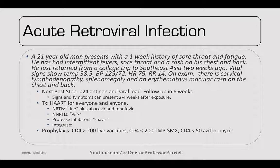You would want to treat everyone with HAART therapy. Drug classes include NRTIs, which all end in '-ine' (plus abacavir and tenofovir); NNRTIs, which have '-vir' in the middle; protease inhibitors, which end in '-navir'; and integrase inhibitors. For AIDS prophylaxis: anyone with CD4 greater than 200 can get live vaccines. Anyone with CD4 less than 200 should be on TMP-SMX. Anyone with CD4 less than 50 also needs azithromycin.